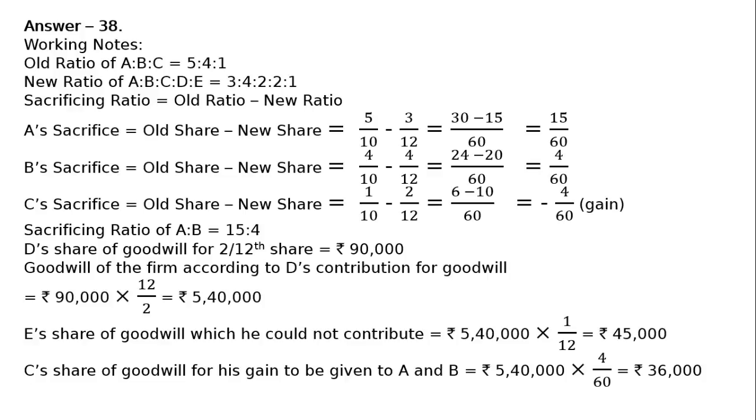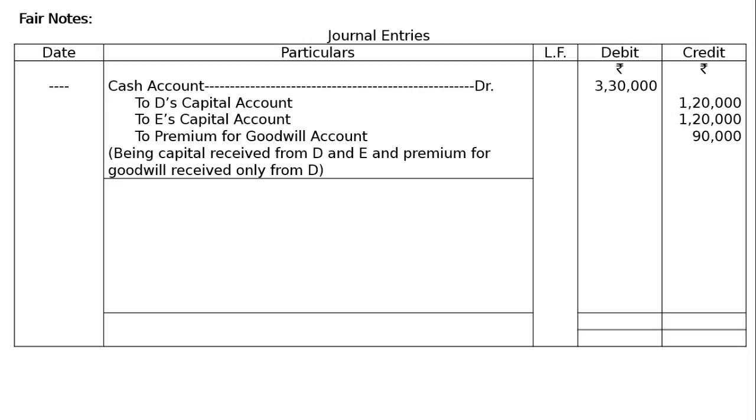Hence, fair notes: Draw the journal from. Cash account debited Rs. 3,30,000; to D's capital account Rs. 1,20,000; to E's capital account Rs. 1,20,000 in the credit column; to premium for goodwill account only contribution made by D Rs. 90,000. Being capital received from D and E and premium for goodwill received from D only.